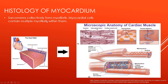Now I'm going to go into the histology of the myocardium — the cells that comprise this layer of the heart. Sarcomeres form myofibrils, and myocardial cells — myocytes — contain multiple myofibrils. Each individual repeating unit in the picture is a sarcomere; the entire collective group of sarcomeres forms a myofibril; and many myofibrils form one cardiac muscle cell. The cell membrane of the cardiac muscle cell is called the sarcolemma — this is the lining of the myocyte.